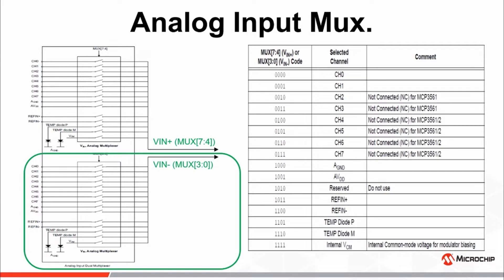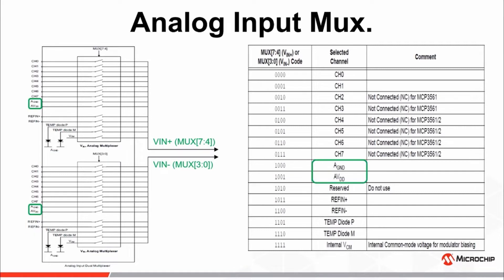In addition to the external analog inputs, the ADC also has the ability to perform diagnostic checks on several internal and external ADC resources, such as AVDD and A ground, the 1.2 volt common mode voltage used to bias the delta sigma modulator, as well as the REFN+ and REFN- external voltage reference input pins. It should be noted that when the REFN+ and REFN- inputs are monitored via the MUX, the ADC will use the same REFN+, REFN- inputs as the reference to the ADC.